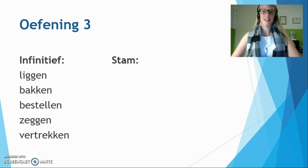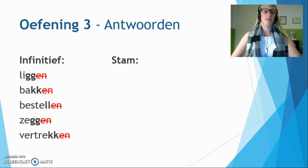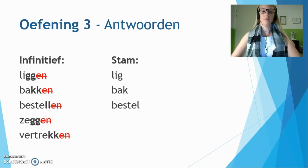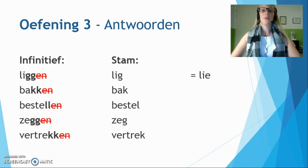Time for the answers. We remove -en, and I've highlighted the important parts. Liggen has two g's — make it just one: lig. Bakken has a double k — becomes one k: bak. Bestellen has a double l — becomes one l: bestel. Zeggen has a double g — becomes one g: zeg. Vertrekken has a double k — becomes one k: vertrek. Meanings: ik lig — I lie (as in lying on the couch); ik bak — I bake; ik bestel — I order; ik zeg — I say; ik vertrek — I depart.